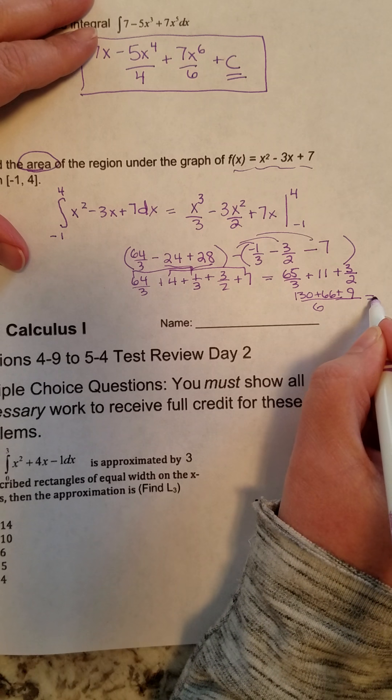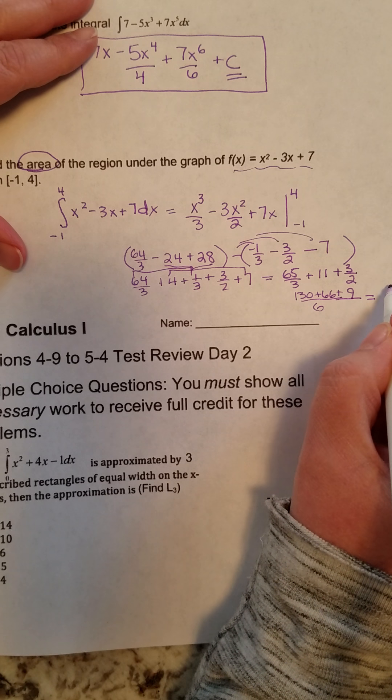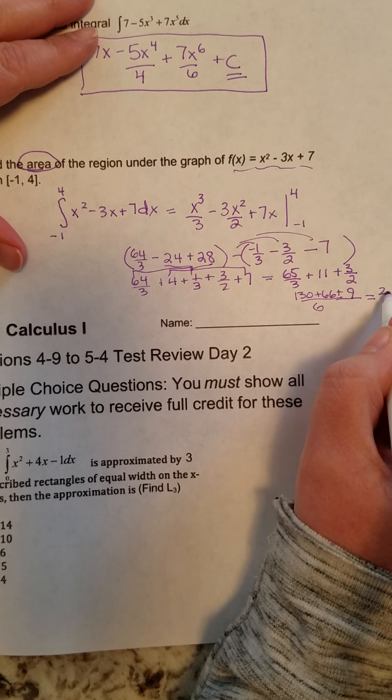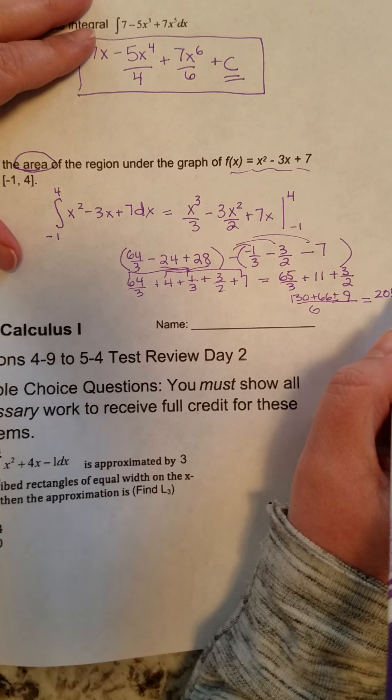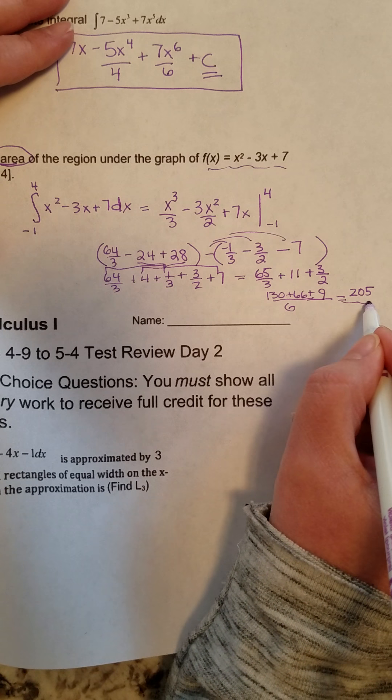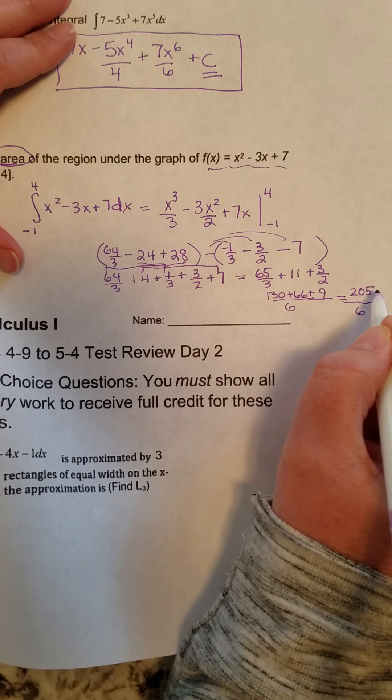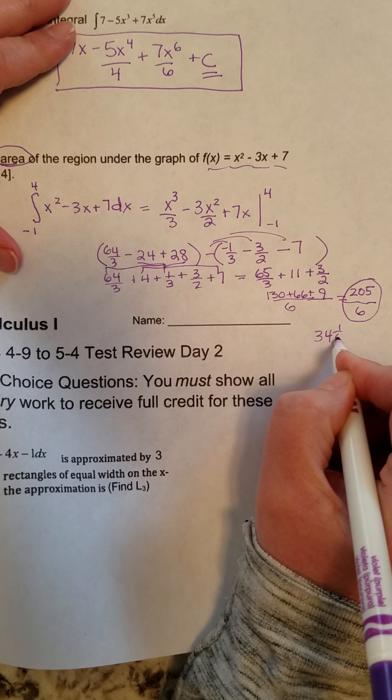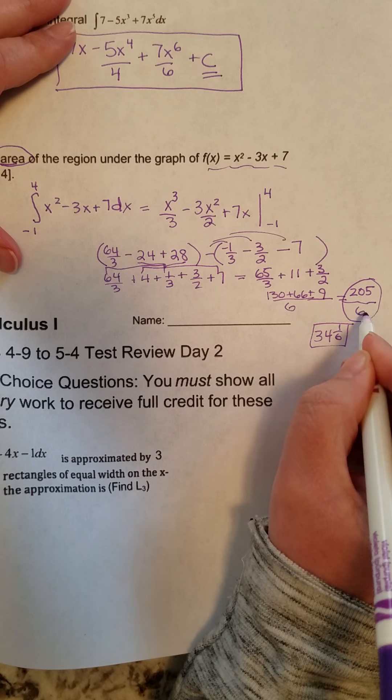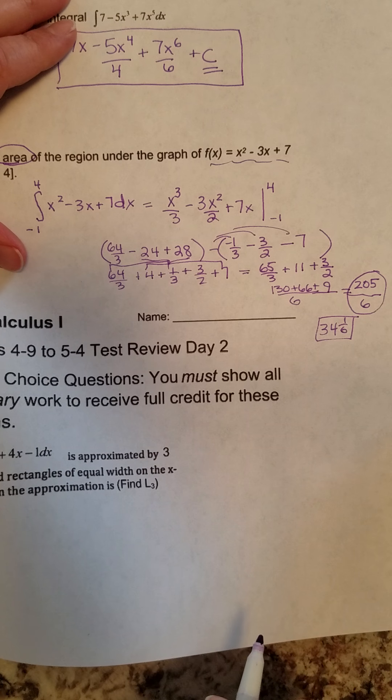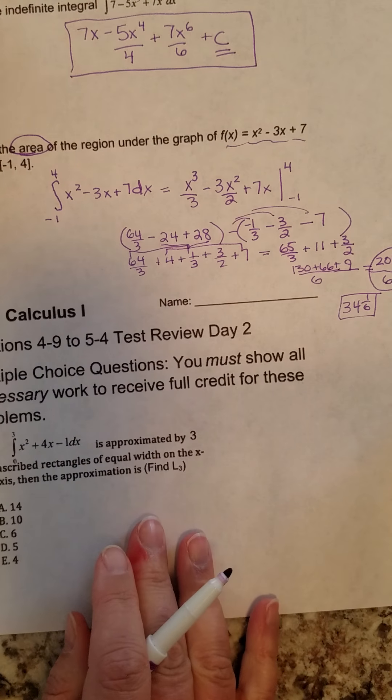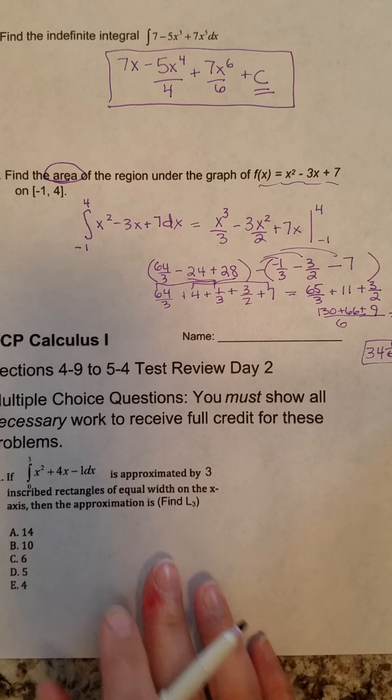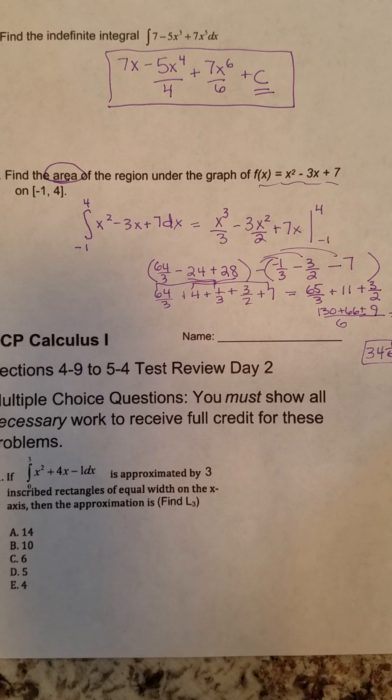And then when I add those together, I get 196 plus 9 is 205 over 6. So that would be an exact answer right there. Or, of course, 34 and 1 sixth. But I think most of you are probably just going to give me the 205 over 6 from what I've seen so far from you. That finishes up our day one of our test review. Thank you.